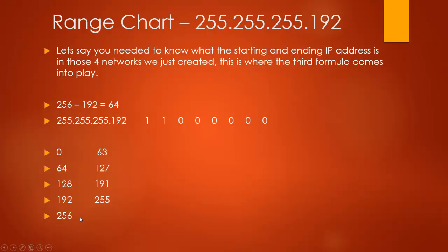Once you hit 256, that tells you to stop because you can't go any further — the total combinations of a byte is 256. To get the second column, subtract 1 from each value and move it over: 256 minus 1 is 255, 192 minus 1 is 191, and so on. So your four networks are: 0 to 63, 64 to 127, 128 to 191, and 192 to 255. Your range chart should always end in 256 — if you get anything higher, your math is wrong.